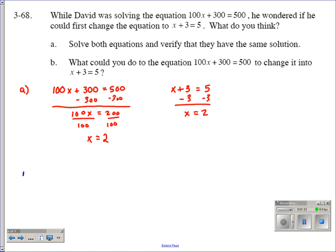And if we look at it there, we have 100x plus 300 equals 500. Each of those three numbers there has a common factor that goes into them. So that number would be 100.